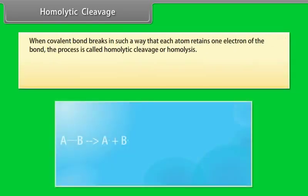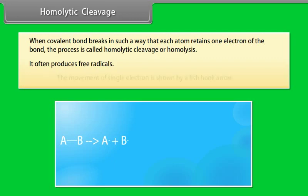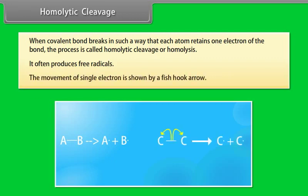Homolytic cleavage: when a covalent bond breaks in such a way that each atom retains one electron of the bond, the process is called homolytic cleavage or homolysis. It often produces free radicals. The movement of a single electron is shown by a fishhook arrow.